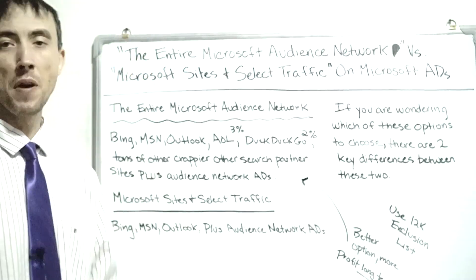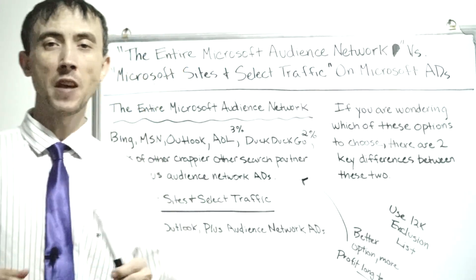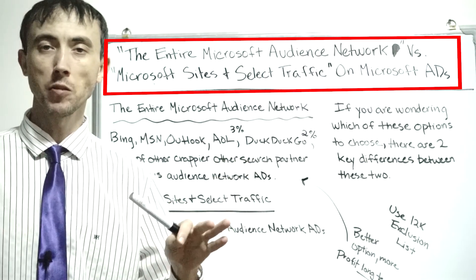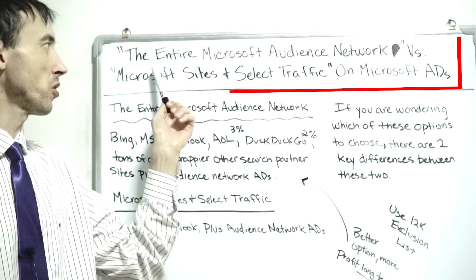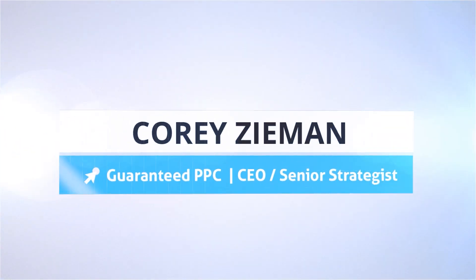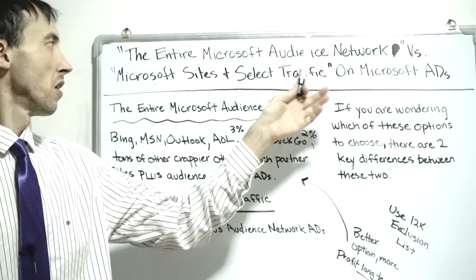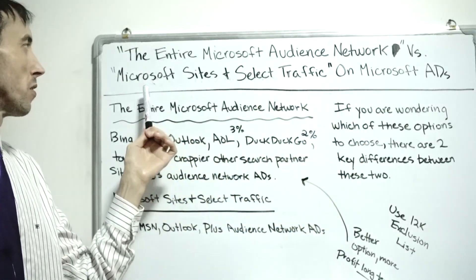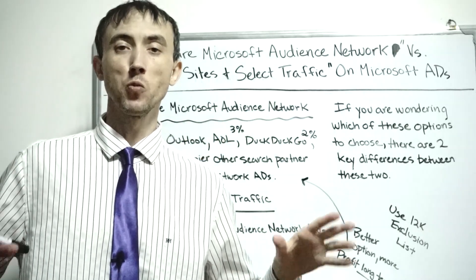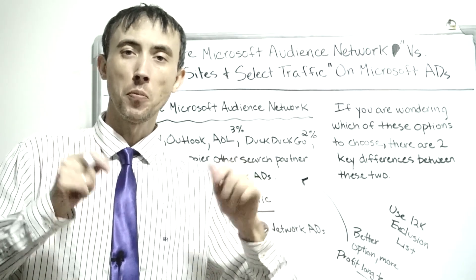Today's video we're going to talk about if you're running Bing/Microsoft ad campaigns. You'll get to the point in the settings menu where you'll have to decide if you want to choose the entire Microsoft Audience Network or Microsoft Sites and Select Traffic. I'm going to explain what the differences are between these two and which one you want to pick for more profits.